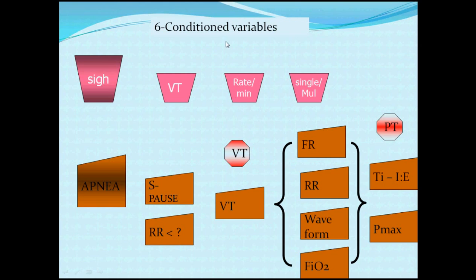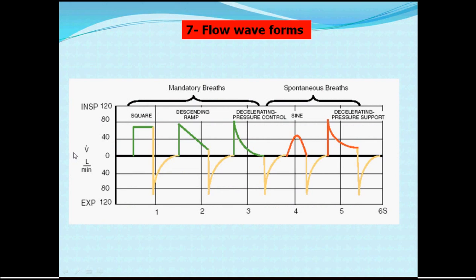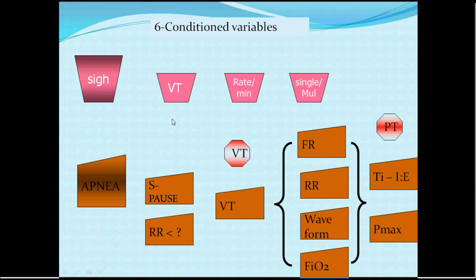The next point is conditional variables. For example, delivering the same tidal volume monotonously may lead to lung dysfunction, so you must mimic normal physiology by changing the tidal volume periodically. You deliver a breath slightly larger than normal — at a set rate, either multiple or single per minute — this is a sigh. The function of the sigh is to open collapsed alveoli and increase oxygenation.